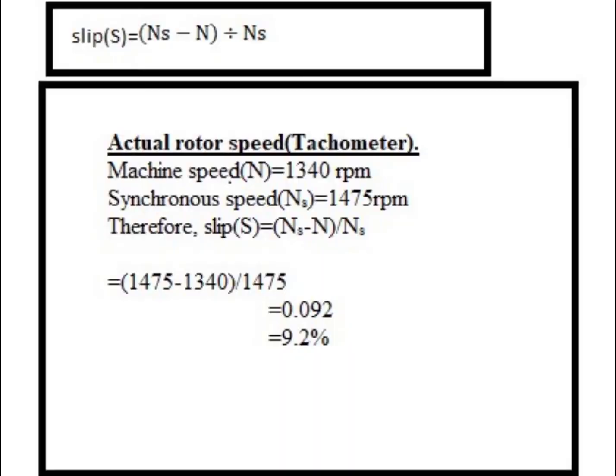From the tachometer, we got the synchronous speed as 1475 rpm, and when we calculated the slip, we got it as 0.0915, which rounds off to 0.092.